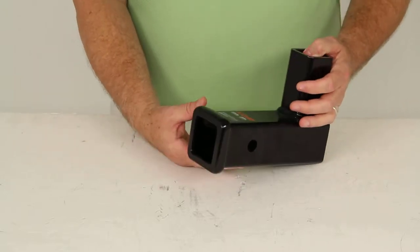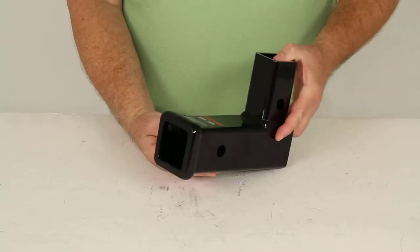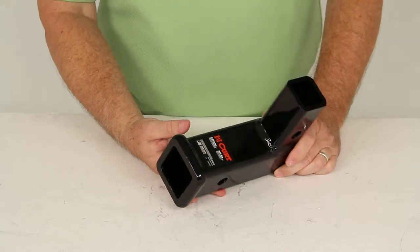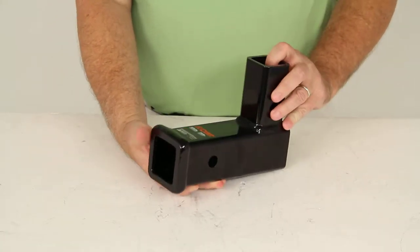Today we're going to review part number C45013. This is the CURT vertical receiver adapter. This is a two inch to two inch adapter.